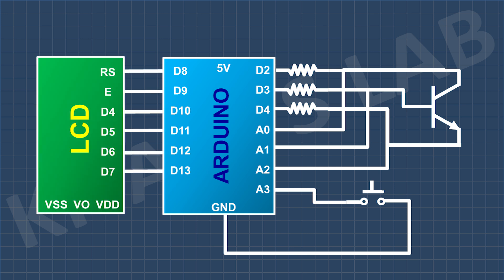The LCD displays the transistor type and pin configuration. A 10k trim pot allows brightness control for better visibility. A 2-pin terminal block is used to provide a clean 5-volt power supply, preventing voltage fluctuation.